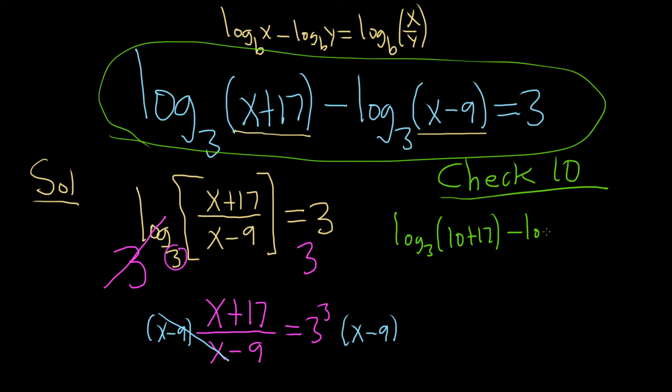So we have log base 3 of 10 plus 17, which is 27. I'm just showing all the steps. Minus log base 3 of 10 minus 9. I usually skip steps. Like if I was just rushing through it, I would just write 27. You can skip steps.